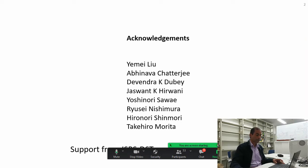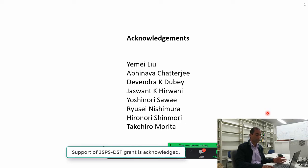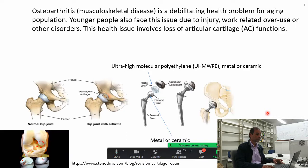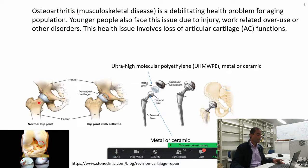Before I start, let me acknowledge the individuals — many are or were my students, and some are colleagues. I also acknowledge funding help from JSPS and DST. The issue of osteoarthritis happens because of old age, injury, work-related injury, or some disorder. Osteoarthritis affects the joints — here we focus on the hip joint, and the knee joint has similar issues.